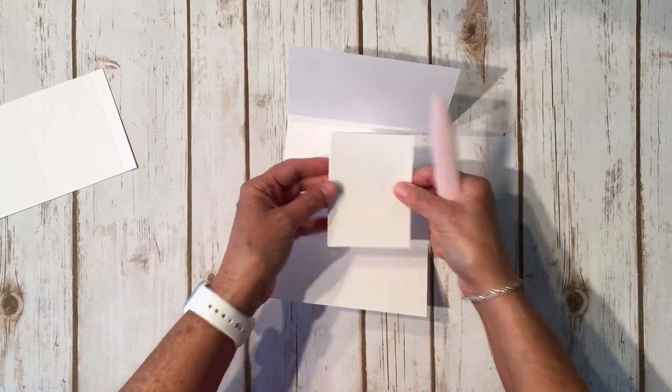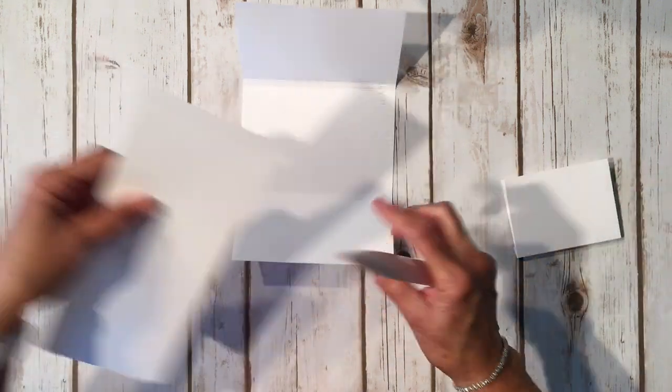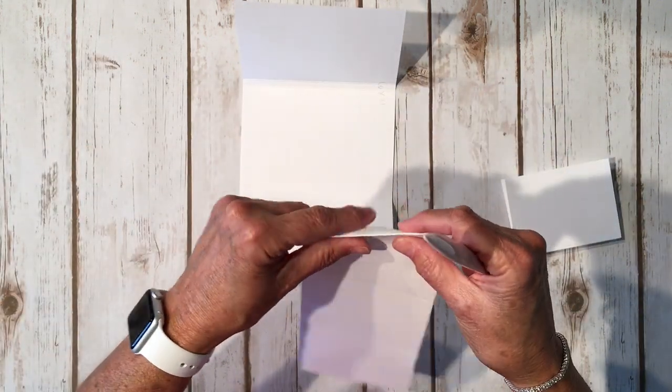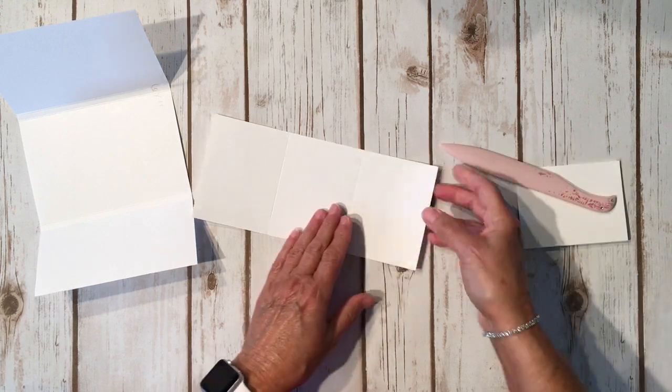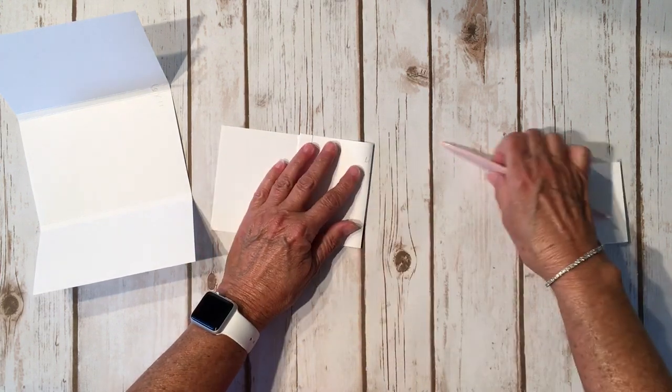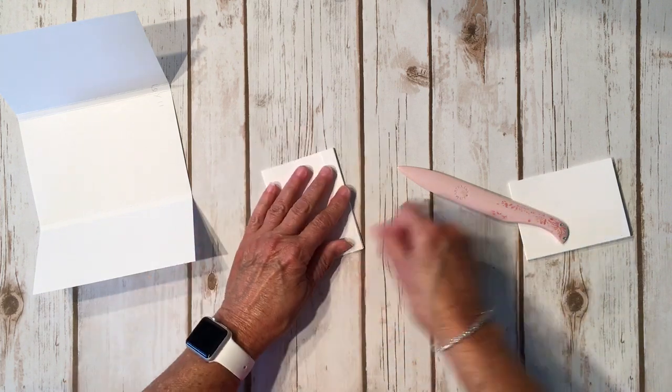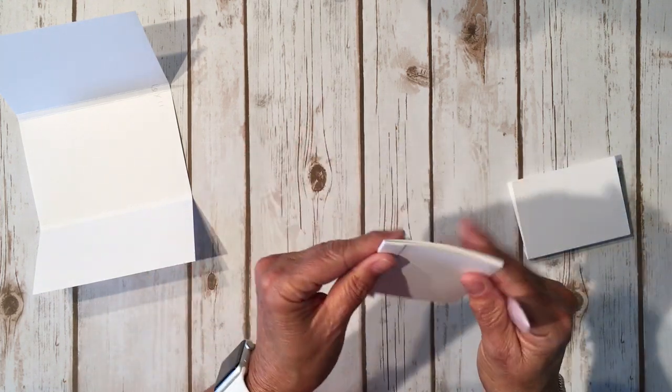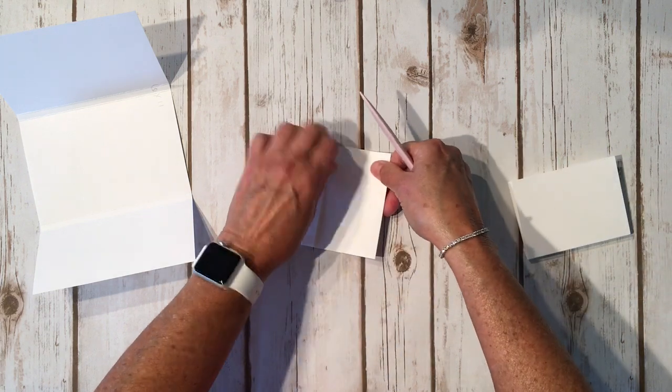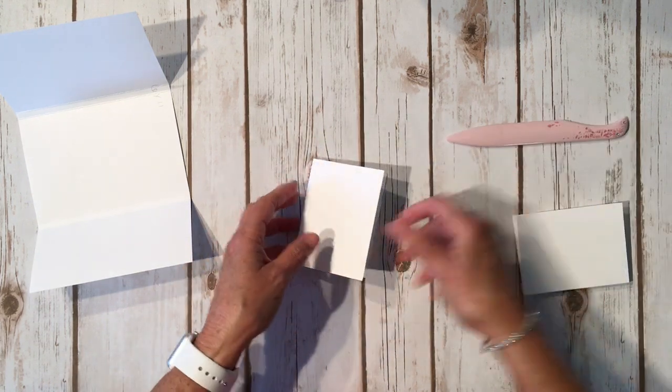Okay, so there's one. We're going to fold the other one, again we're going to accordion fold it, or mountain valley, or whatever y'all want to call it. Just make sure that it's straight. Okay, so we have these two little pieces.